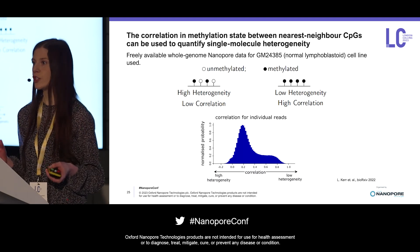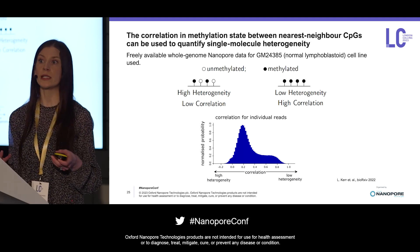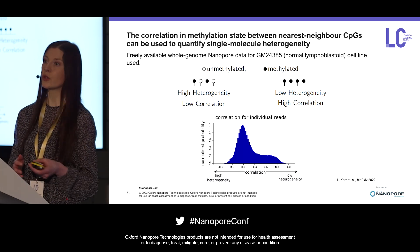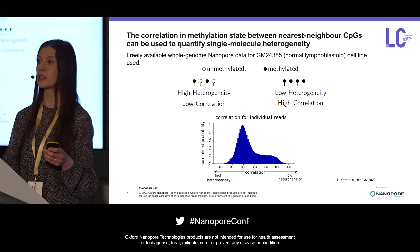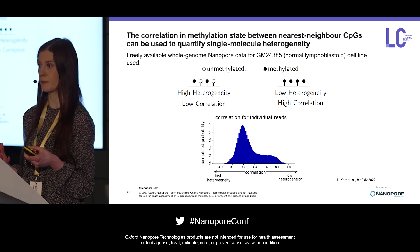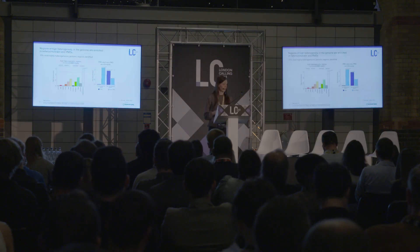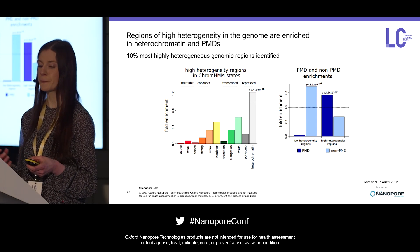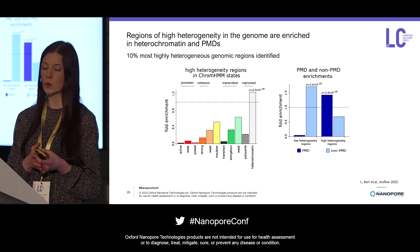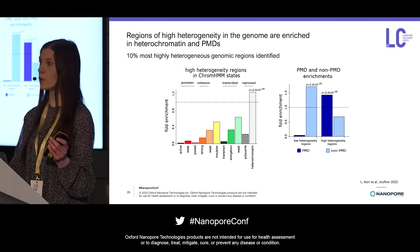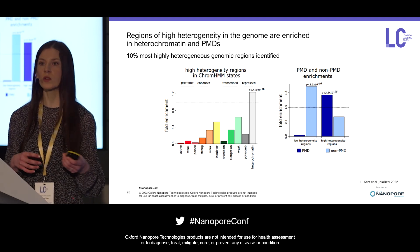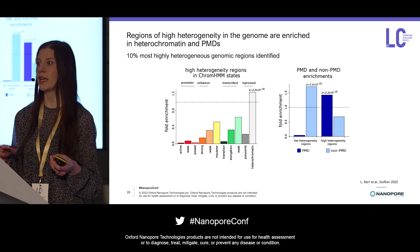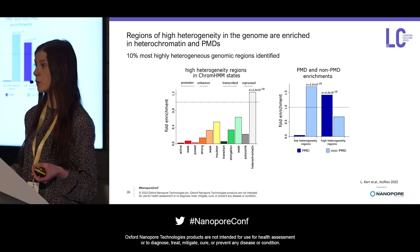I was most interested in those low correlation reads — the highly heterogeneous and disordered reads — and wanted to identify where in the genome these disordered patterns can be found. I took all the reads, aligned them to the genome, and extracted the 10% of genomic regions associated with highly disordered patterns within single molecules. I then conducted an enrichment analysis using ChromHMM states from ENCODE, which annotate distinct chromatin states, and found that the most disordered and heterogeneous patterns are significantly enriched in heterochromatin.